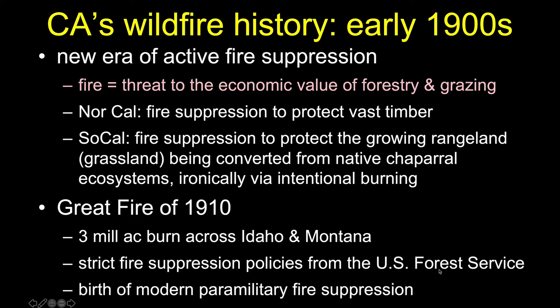In Northern California, fire suppression was really about protecting large swaths of timber. In Southern California, it was about protecting growing rangelands where we'd be grazing livestock, and also where we were converting native chaparral ecosystems — ironically via intentional burning — to try to replace woody species with grasses.